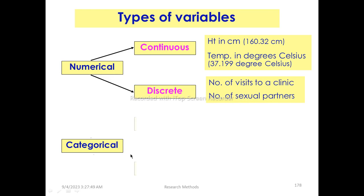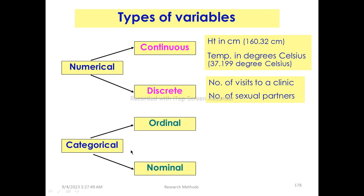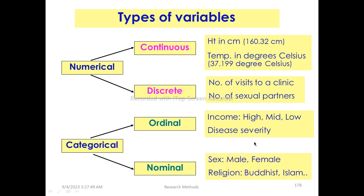For categorical variables, ordinal examples include income categories — high income, medium income, low income — and severity levels — severe, moderate, mild. Nominal examples include religious classification: Islamic, Protestant, and Buddhist.